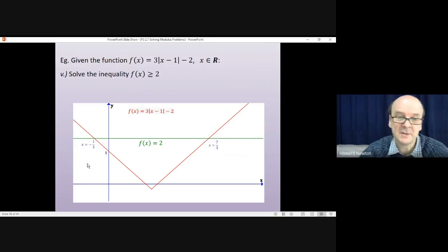To solve the inequality, we just need to say, well, the red line's above the green line back here, where x is less than that. And the red line's above the green line on the far right, where x is bigger than that. So that would be the answer. x has to be less than or equal to minus a third for this part. x has to be bigger than or equal to seven thirds for this part.